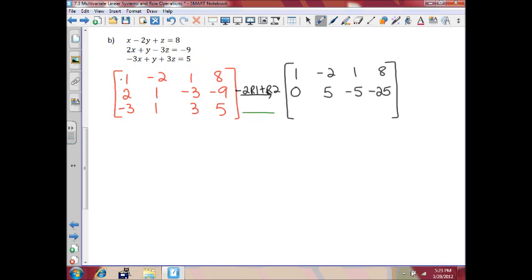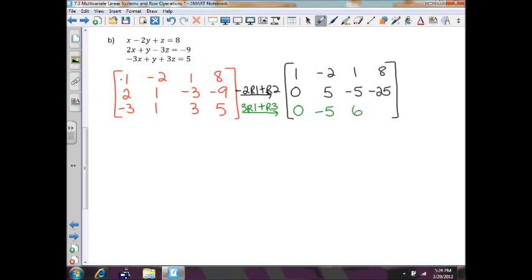Now to get rid of the 3 in the bottom row, we take 3 times row 1 plus row 3. 3 times 1 is 3, plus negative 3 is 0. 3 times negative 2 is negative 6, plus 1 is negative 5. 3 times 1 is 3, plus 3 is 6. 3 times 8 is 24, plus 5 is 29.